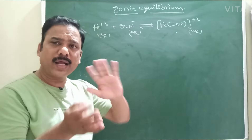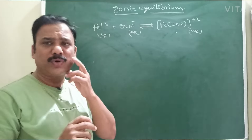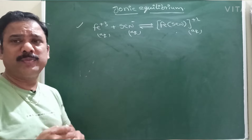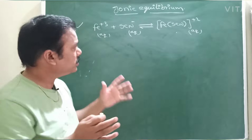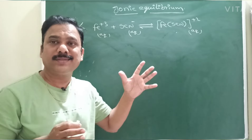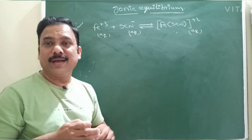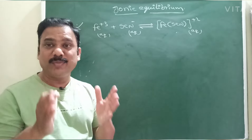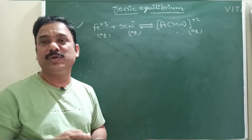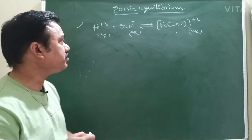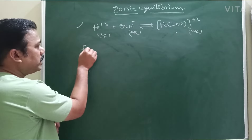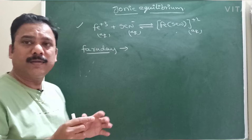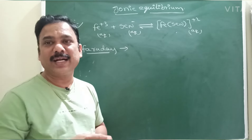In ionic equilibrium, we are going to study about electrolytes and non-electrolytes. After that, what are acids, bases, salts, what is salt hydrolysis, what is solubility product — all these we are going to discuss in this chapter. Michael Faraday first classified substances into two categories: electrolytes and non-electrolytes.